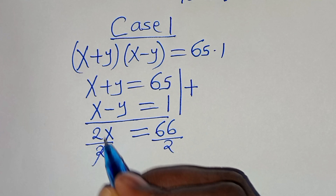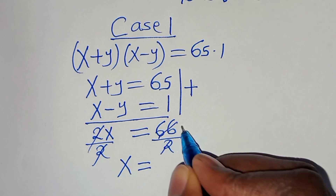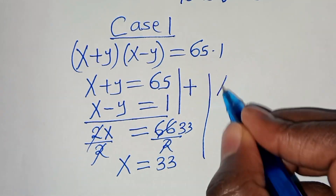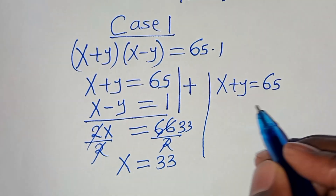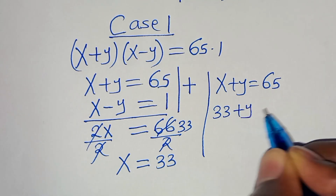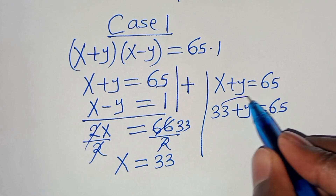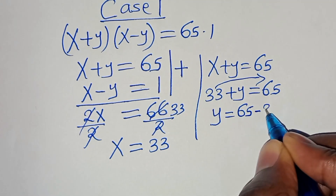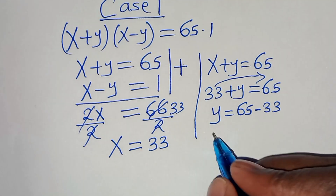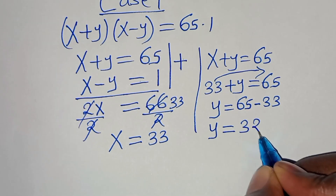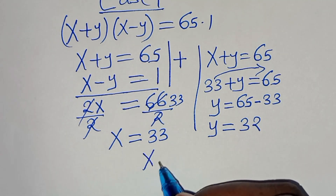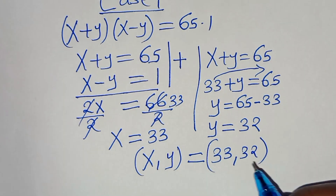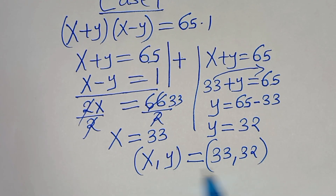Dividing both sides by 2, we get x = 66 divided by 2, which equals 33. To solve for y, using x + y = 65, we substitute x = 33: 33 + y = 65, so y = 65 minus 33, which means y = 32. So the first set of solutions is x, y = (33, 32).